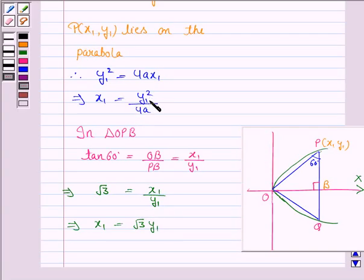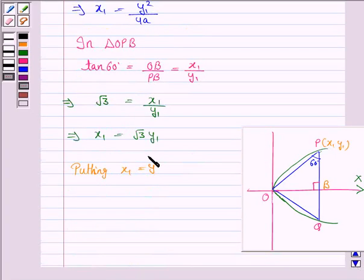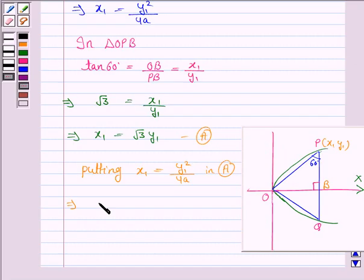Now, we know that x1 is y1 square upon 4a. In A, we have y1 square upon 4a is equal to root 3 y1. And this implies y1 is equal to 4 root 3 A which is equal to PB.